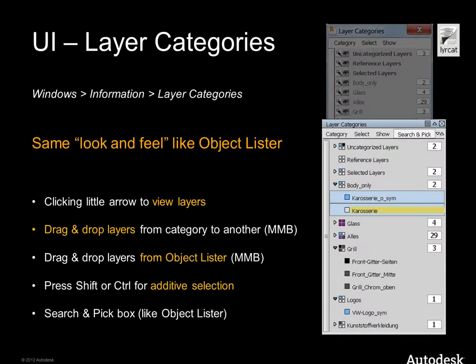The last example here is the layer categories. Layer categories are for grouping layers logically. You see the old window at the top, semi-transparent. In the old version, looking at the category grill, you just see that there are three layers in this category but don't see which ones. In the new window you see everything — you can expand and compress, and even drag and drop with the middle mouse button. You have the same layers with the same colors: yellow for the current layer, selected blue for selected layers.